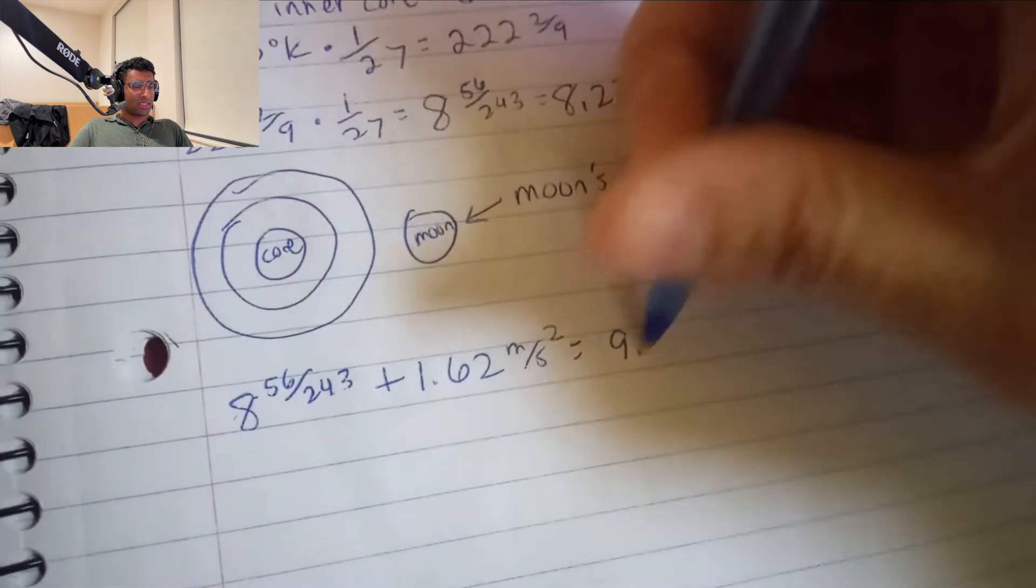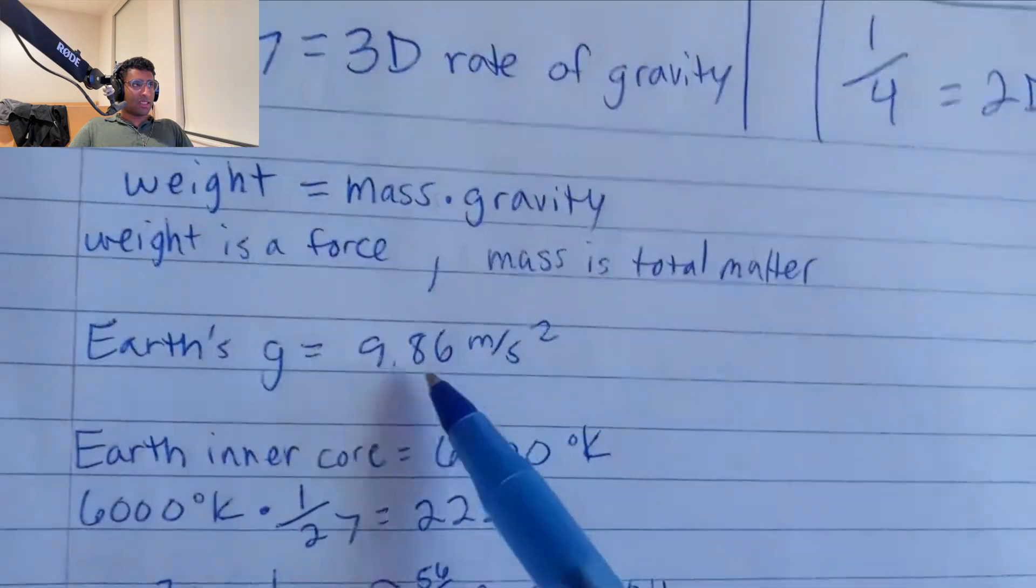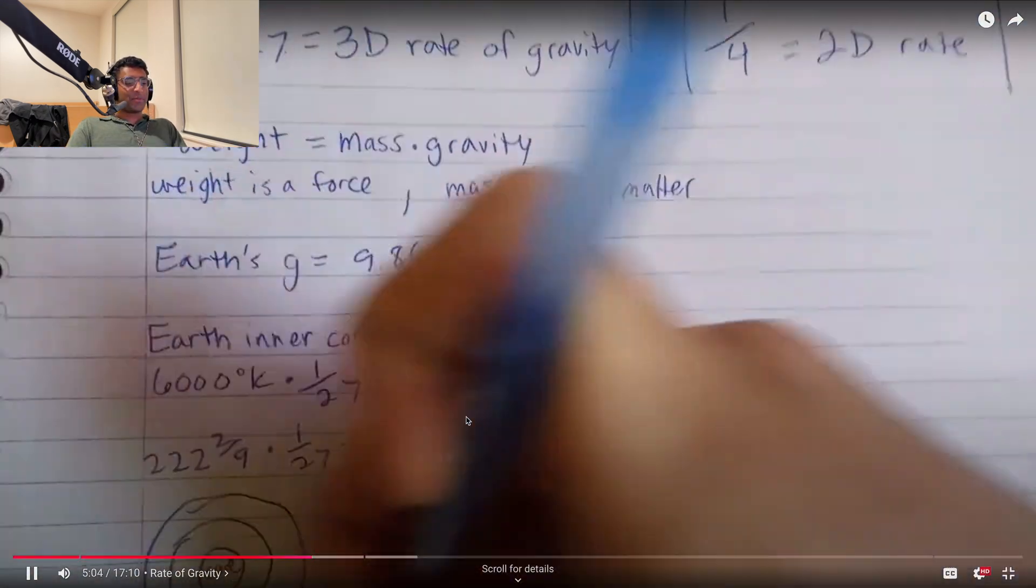And all we got to do is add 1.62 meters per second squared. And what do we get? Now I'm going to write meters per second squared. I want you to be the judge. This is one of my first proofs on how important 1 divided by 27 is.